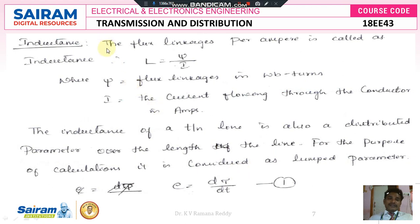Inductance is defined as the flux linkages per ampere. Mathematically, L is equal to ψ by I, or since ψ means Nφ, L is equal to Nφ by I. Therefore LI equals Nφ, or LI equals ψ. Here ψ is the flux linkages in Weber turns and I is the current flowing through the conductor in amperes.